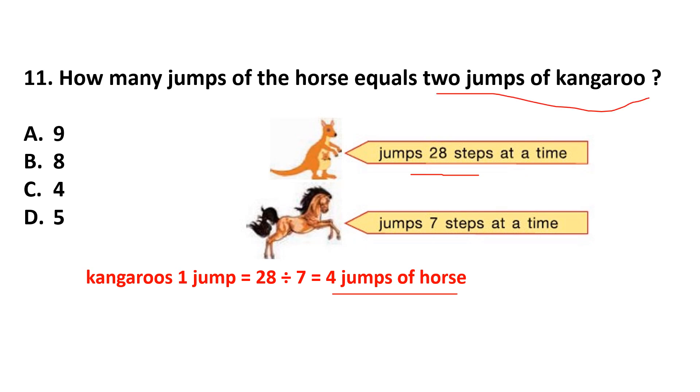Now, we have to find 2 jumps of kangaroo. 2 jumps of kangaroo equals 2 multiplied by 4, that is 8. 8 jumps of horse. Answer is option B.